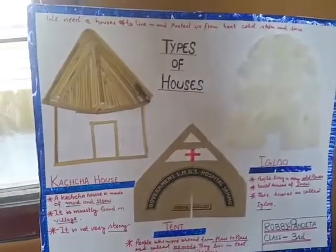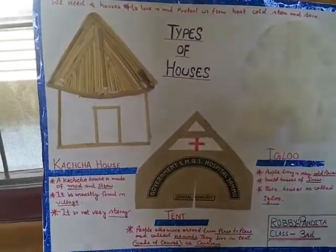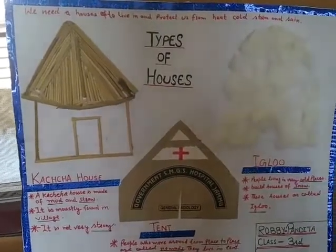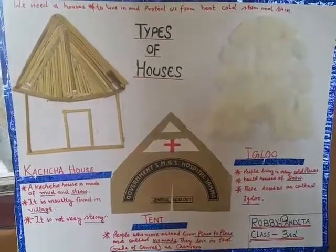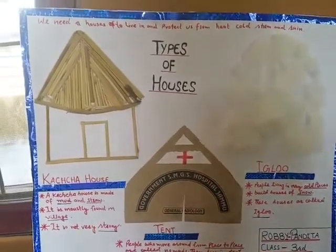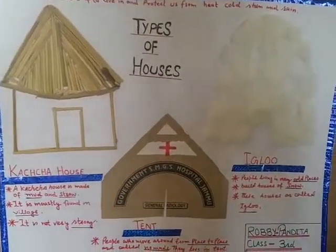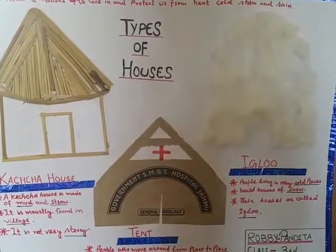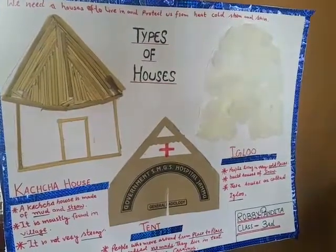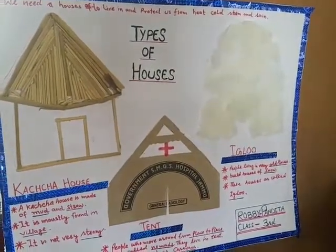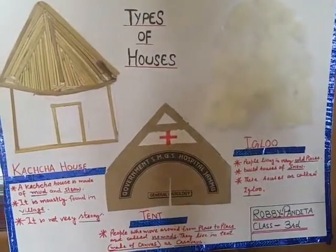Good afternoon. My name is Robert Bandita, class 3rd. My topic is types of houses. A kaccha house is made of mud and straw. It is mostly found in villages. It is not very strong. People who move around from place to place are called nomads. They live in tents made of canvas. People living in very cold places live in igloos.